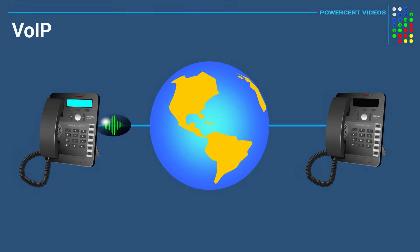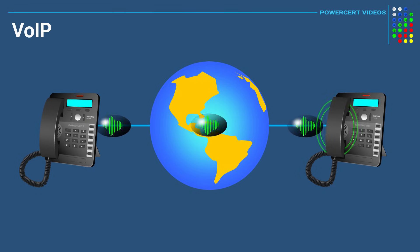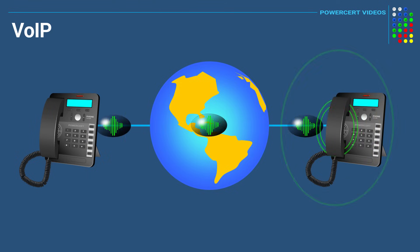The data packets then travel across the internet using RTP and are routed to the person you are calling. Once the data packets arrive, they are reassembled so the recipient can hear and understand your message.